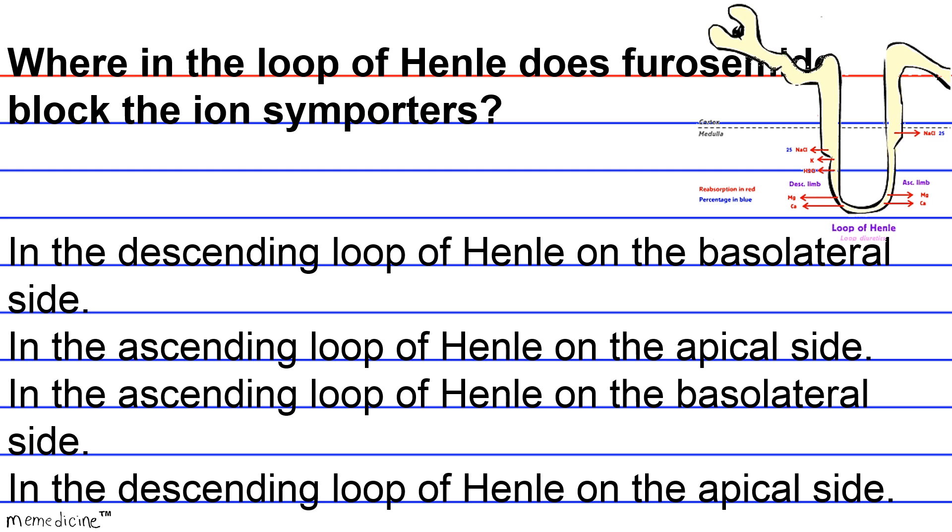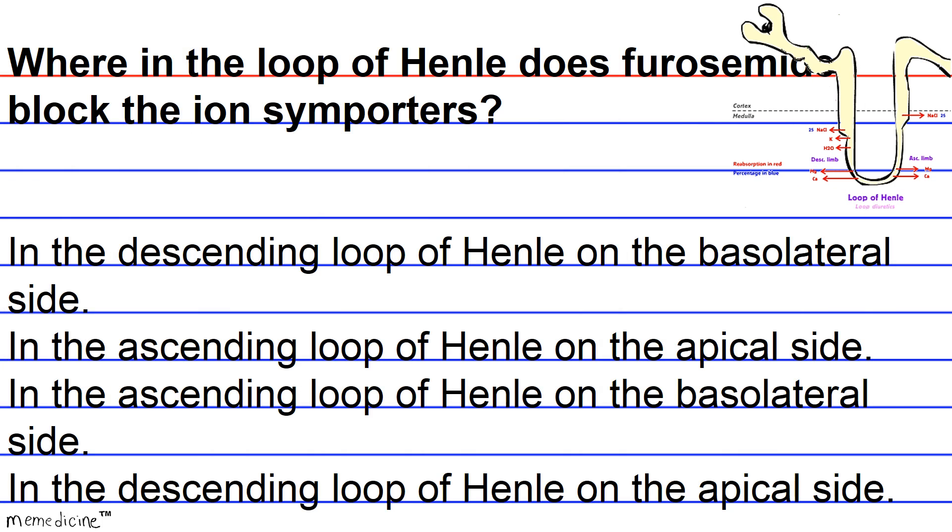Okay, so furosemide is filtered out of the blood through the lumen of the nephron, this tan yellowish region here. There's little furosemide on the basolateral side outside of the lumen. The basolateral side is the side in contact with the capillaries. So yeah, the basolateral side of renal tubular cells have little furosemide.